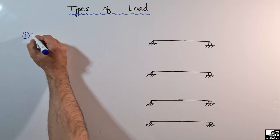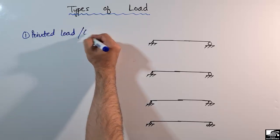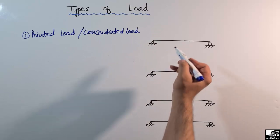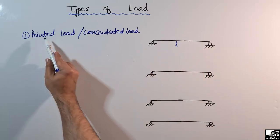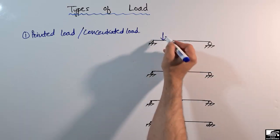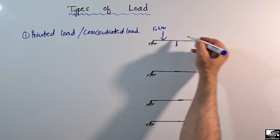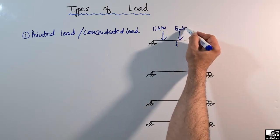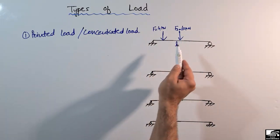The first type is the pointed load or concentrated load. Consider a simply supported beam of any length L meters. The pointed or concentrated load always acts at one point on the beam — for example, a load of 4 kilonewton, or two loads of 10 kilonewton magnitude. This load acts only at one specific point.